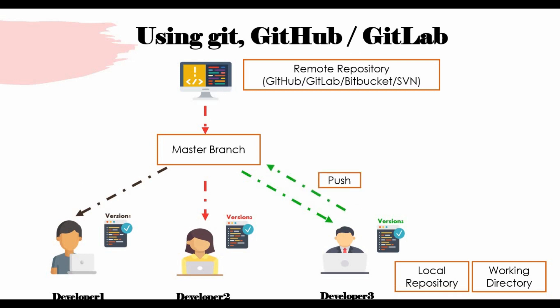You commit those changes, which go to the local repository, and then push them to the master branch — creating a new version, for example moving from v1 to v2. In practice, organizations create feature branches from the master branch. Developers make changes in feature branches locally, then push back to their feature branch. Each developer has their own feature branch, and those branches must be merged into the master branch through an approval process.